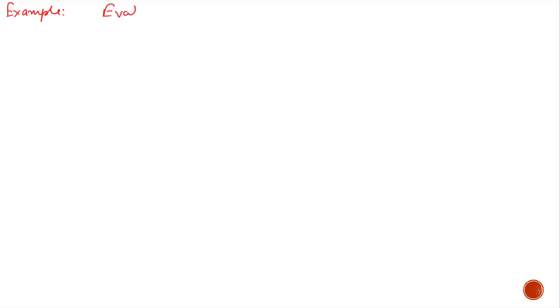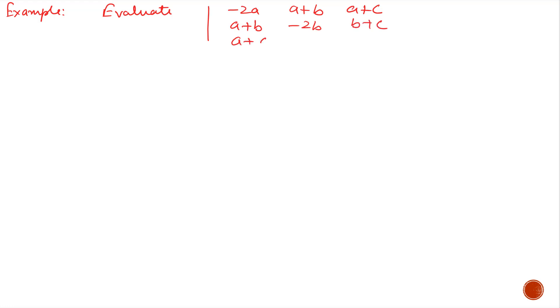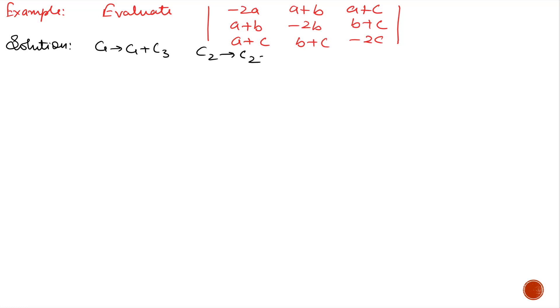Next example: Evaluate using properties of determinants. The determinant with elements -2a, (a+b), (a+c) in the first row; (a+b), -2b, (b+c) in the second row. It is a determinant of a symmetric matrix in which diagonal elements are unequal. So first we use c1 replaced by c1 + c3 and c2 replaced by c2 + c3.